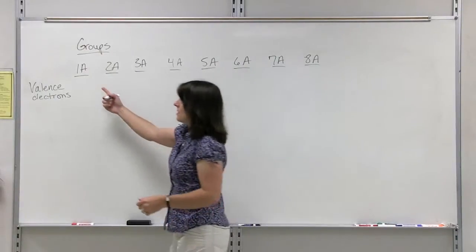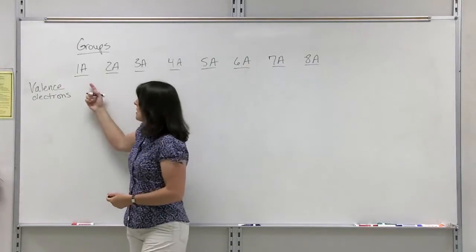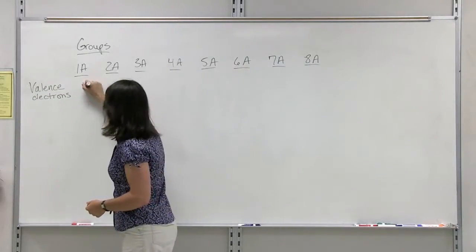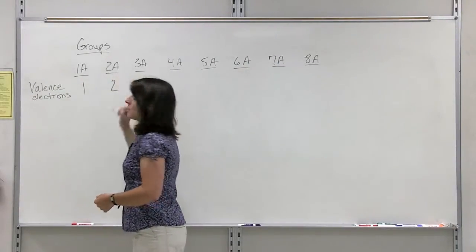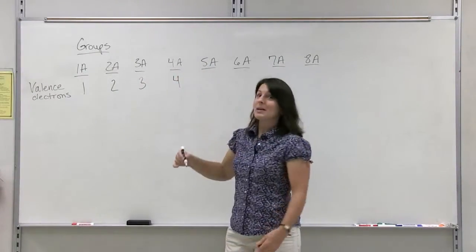The representative groups are the groups that have an A, so 1A through 8A. Group 1A has one valence electron, Group 2A has two, 3A has three, 4A has four. I'm sure you're seeing the pattern by now.